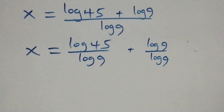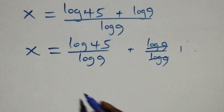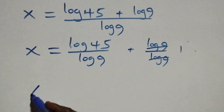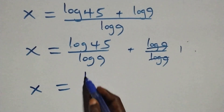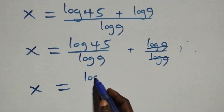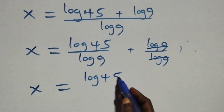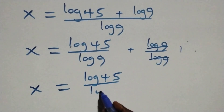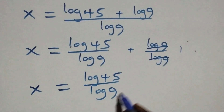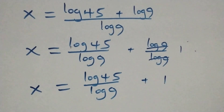Then log 9 over log 9 cancels to give 1, so x equals log 45 over log 9 plus 1.